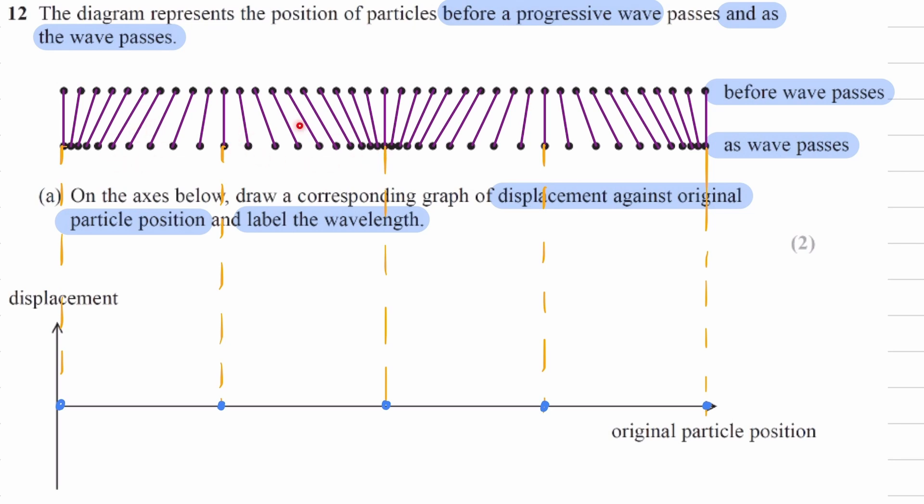These particles here are shifted towards the right. And again, they're shifted the most towards the right over here. So we have a negative displacement. If we consider towards the right as positive displacement, towards the left as negative displacement.